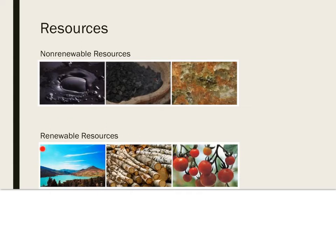Renewable resources can be produced at about the same rate as they are consumed. Water, lumber, and food are all examples of renewable resources. However, renewable resources do have factors that limit their production. For example, even though tomatoes and other crop plants are renewable resources, their production is limited by the availability of fertile soil, solar energy, and water.